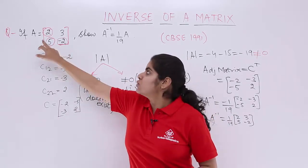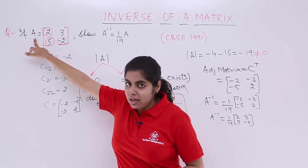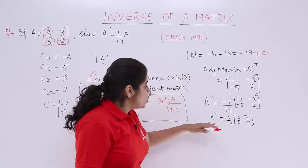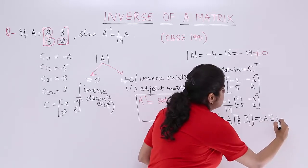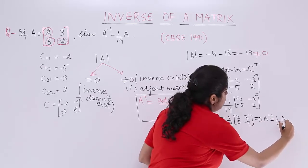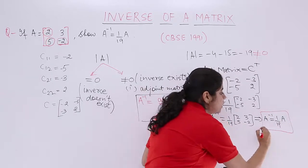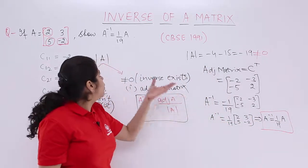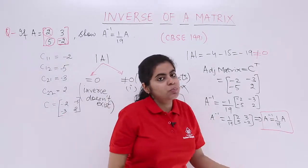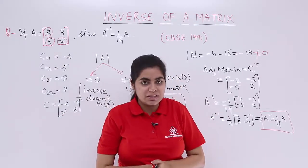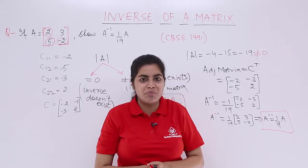What is 2, 3, 5, minus 2? It is nothing but the given matrix A. So you can substitute. Definitely, you got the answer that A inverse equals 1 by 19 of the given matrix A, and that is what we needed to prove. We have proved this question based on the inverse of a matrix.